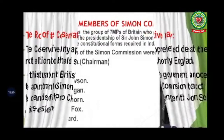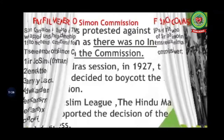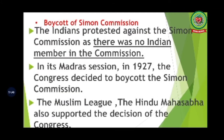The Simon Commission was a group of seven MPs of Britain appointed under the presidentship of Sir John Simon in 1928 to recommend constitutional reforms required in India. The seven members were: Sir John Simon (chairman), Clement Attlee (who later became Prime Minister of England), Harry Levy Lawson, Edward Cardogan, Vernon Hartshorn, George Lane Fox, and Donald Howard — all members of the British Parliament.